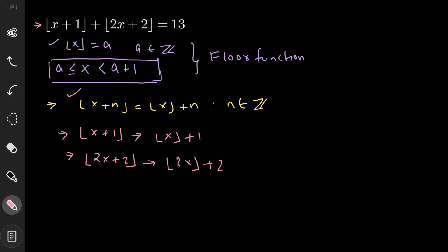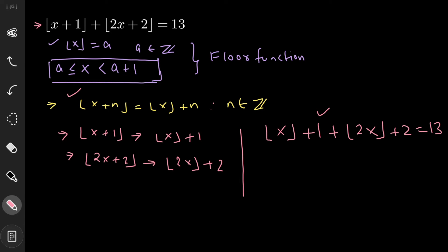Now, applying the identity to the left-hand side, the equation becomes floor(x) + 1 + floor(2x) + 2 = 13. Since 1 + 2 = 3, subtracting 3 from 13 gives 10. So the simplified equation is: floor(x) + floor(2x) = 10.